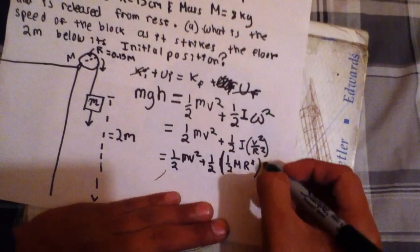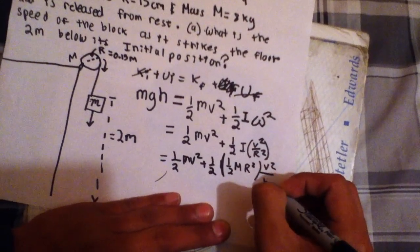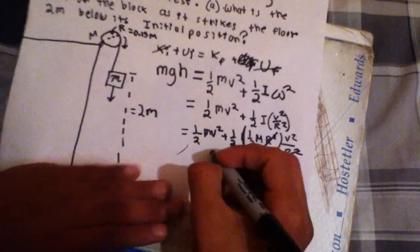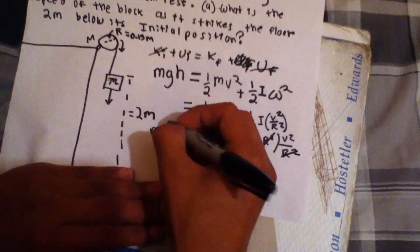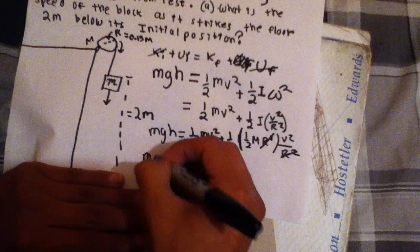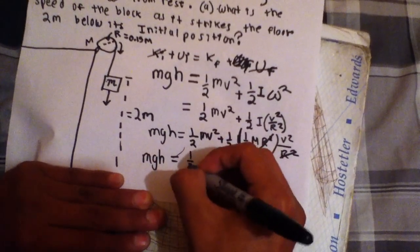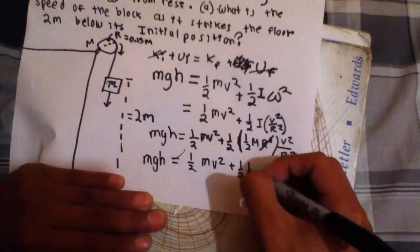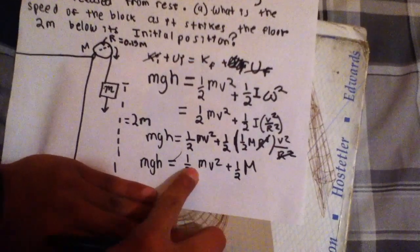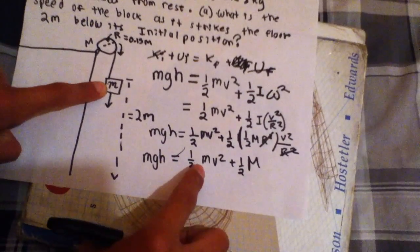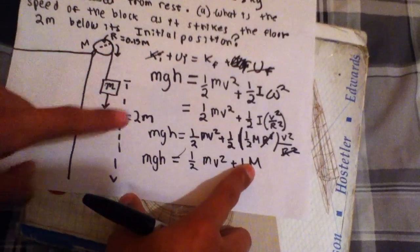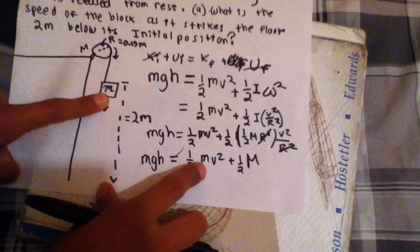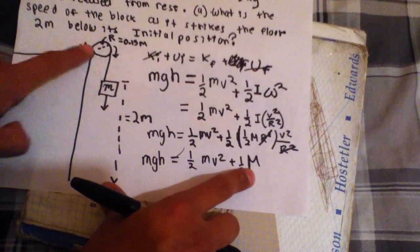And then we can cancel out R squared with R squared. And then we're gonna be left with this: one half m V squared plus one half big M. Notice how these two M's aren't the same. One of them is for the block, denoted by the smaller m. And then the capital M is the mass of the pulley.